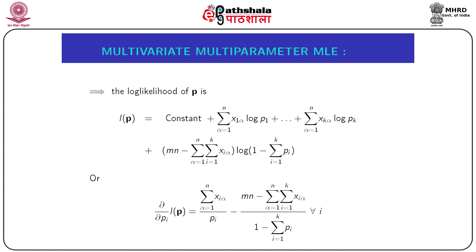The log-likelihood is: l(p) = constant + log(p₁)·Σₐ x₁ₐ + ... + log(pₖ)·Σₐ xₖₐ + log(1 − Σpᵢ)·(mn − ΣΣ xᵢₐ). The first-order partial derivative of the log-likelihood with respect to pᵢ equals (Σₐ xᵢₐ)/pᵢ − (mn − ΣΣ xᵢₐ)/(1 − Σpᵢ), for all i.